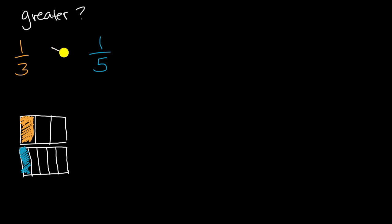So one-third is greater than one-fifth. And so you might have noticed an interesting pattern. You might have been tempted when you saw the five here. Five is larger than three, but one-fifth is less than one-third or one-third is greater than one-fifth.